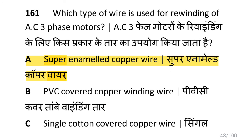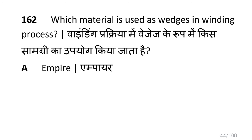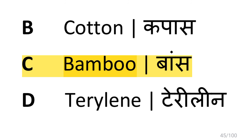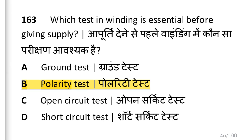The type of wire used for rewinding AC three phase motors is super enameled copper wire. The material used as wedges in the winding process is bamboo. The test essential before giving supply to a winding is the polarity test.